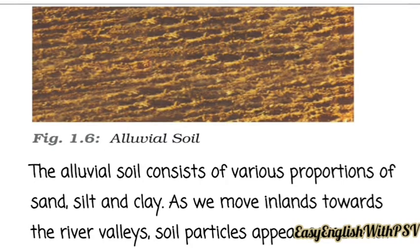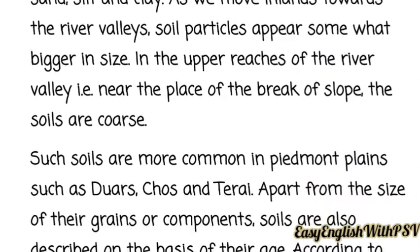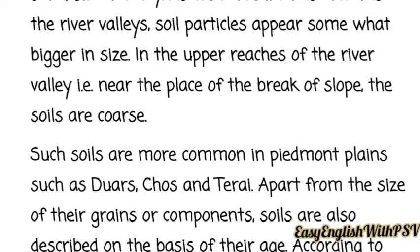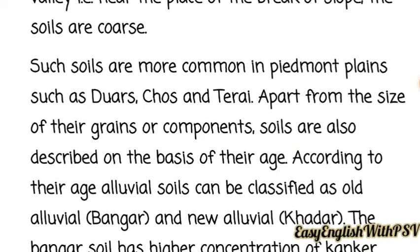Alluvial soil consists of various proportions of sand, silt, and clay. As we move inland towards the river valleys, soil particles appear somewhat bigger in size. In the upper reaches of the river valley near the break of slope, the soils are coarse. Such coarse soils are more common in piedmont plains such as the Doon, Chos, and Terai regions.